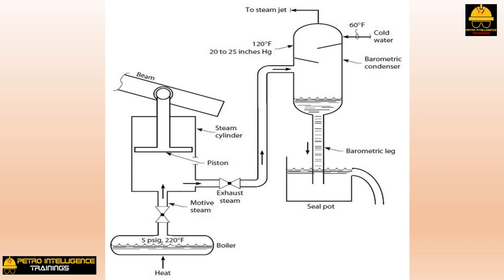Two problems arose with the use of the barometric condenser. First, if the condenser operated at sub-atmospheric pressure, how can the water be drained out? The solution: set the condenser on a hill 34 feet high, then drain the water down through a barometric leg to a seal pot. The pressure that a column of water 34 feet high exerts is equal to one atmosphere, hence the term 'barometric leg.' The second problem was air leaks — air drawn into the system would build up in the condenser, and this non-condensable vapor was drawn off using a steam jet.